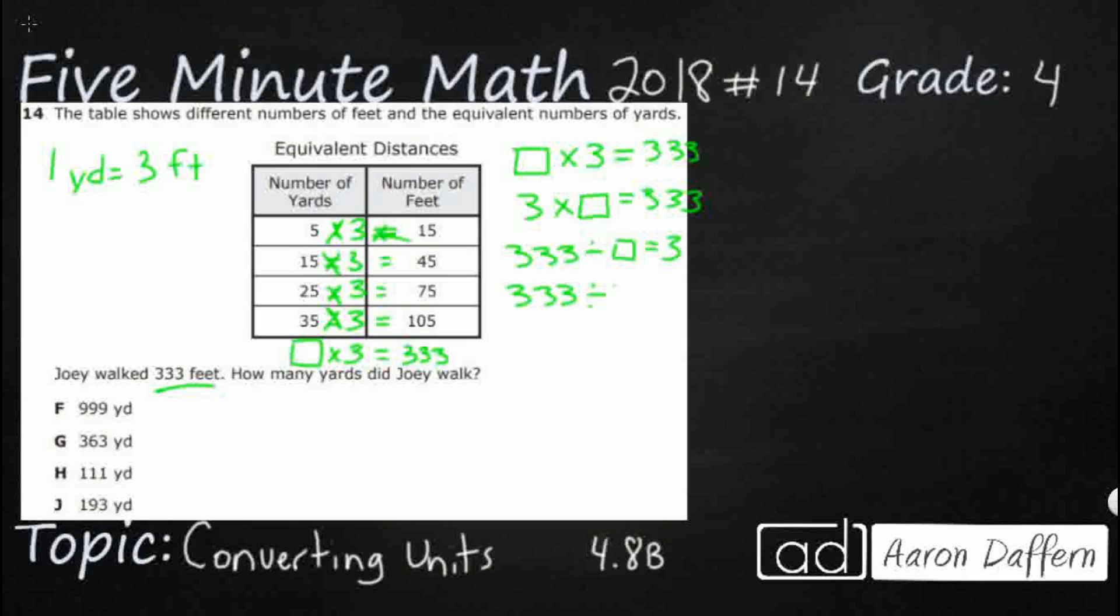If I take 333, if I divide that by three, that is going to give me my missing number. So really, if I were to look at this in a strip diagram here, we would see our total of 333.